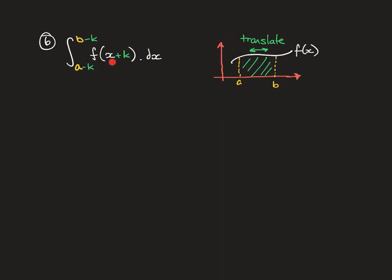The final transformation is a horizontal translation. Imagine picking the whole function and its area up and shifting it left or right — the a and b terminal values change by the same amount as the k value. If we're adding k inside the function, we're moving k units in the negative x direction. So the terminals a and b both shift back by k: we have plus k in the function and minus k on both terminals.